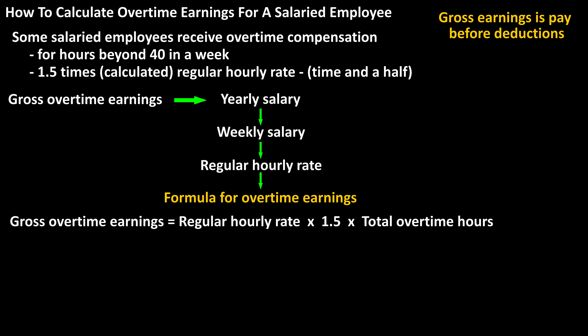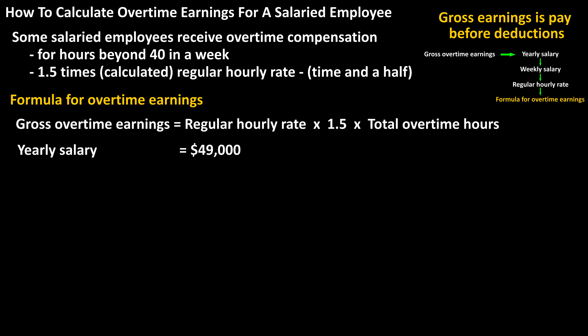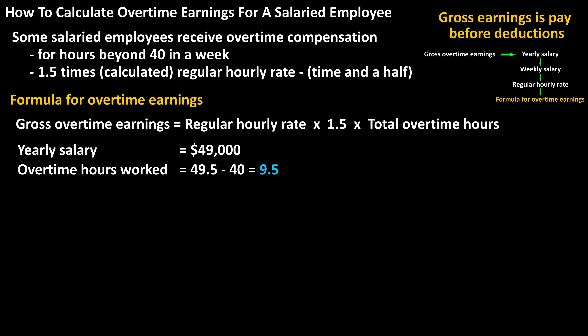As an example, let's say that someone has a yearly salary of $49,000 and gets paid overtime for any hours over 40 in a given week. During a busy week, they work 49.5 hours, so 9.5 hours of overtime. What was their overtime pay for this week?